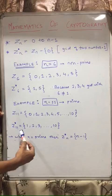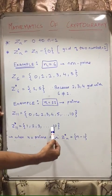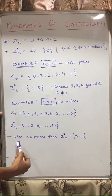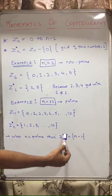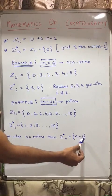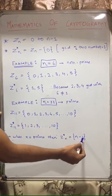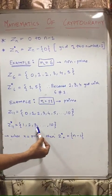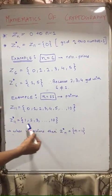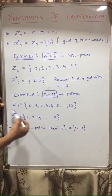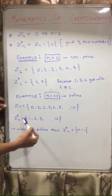So when n is prime number, then Z star n will be equal to n minus 1. So n is 11, so minus 1 is 10. So 1, 2, 3, till 10. So all the numbers from 1 to 10 will be included in Z star 11. Thank you.